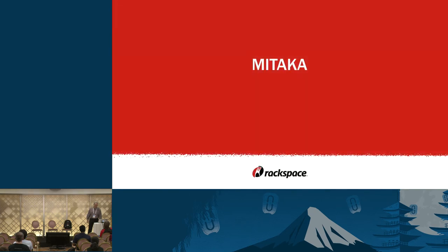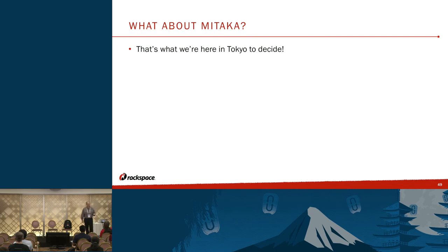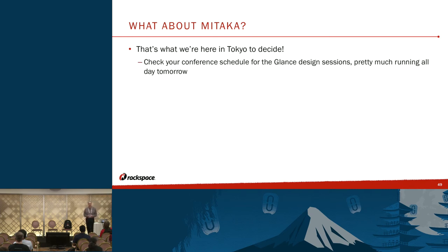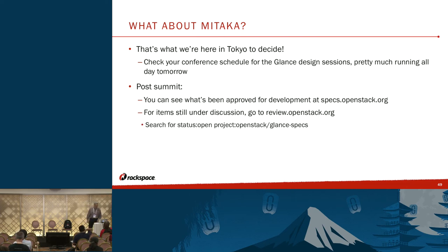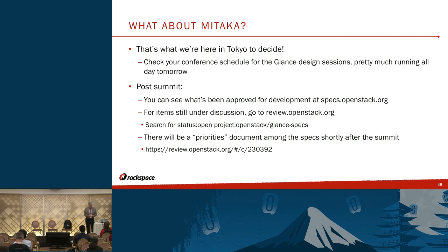This brings us to M — halfway through the alphabet. What about Mitaka? That's what we're here in Tokyo for. You can check your conference schedule — most of the Glance design sessions are tomorrow. After the summit, you can go to specs.openstack.org and find the Glance specs for Mitaka. If you want to see the discussion, go to review.openstack.org and search for the Glance specs to see discussion on the patches. There's going to be a priorities document among the specs shortly after the summit — Flavio has put up a pull request already, with the idea to get it merged probably on Friday.